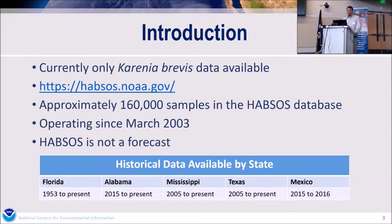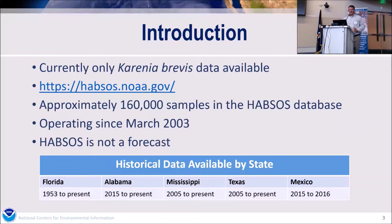It's just over 160,000 samples currently in the database. As mentioned, it's been in operation since early 2000s — March 2003 is the specific date. It is not a forecast; I want to be clear on that. We do have historical data all the way back to 1953, and a lot of other historical data from other states as well.